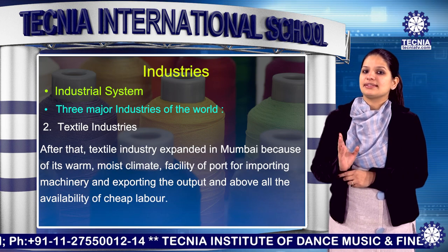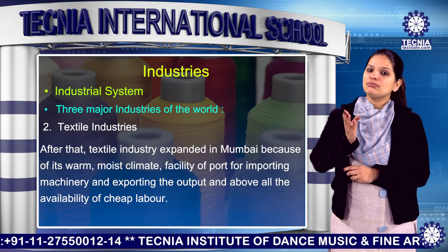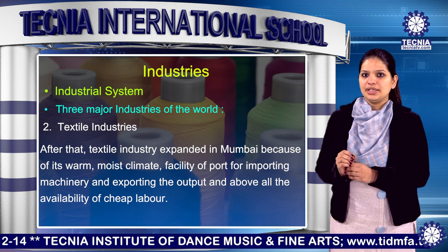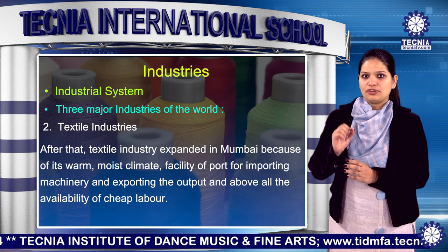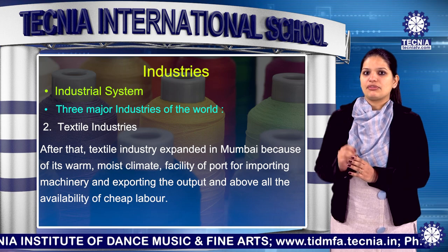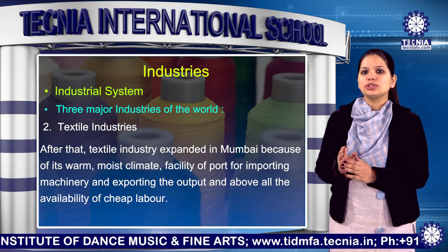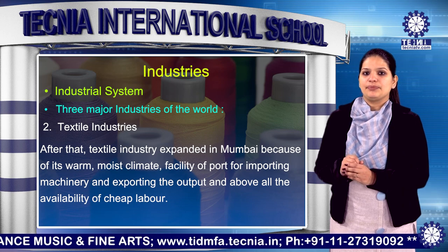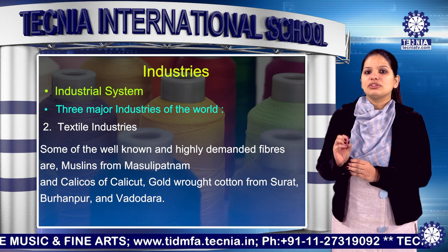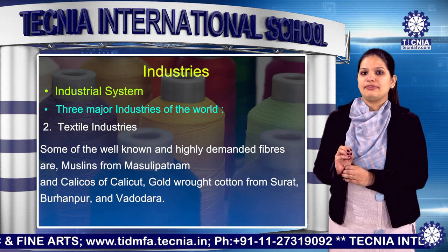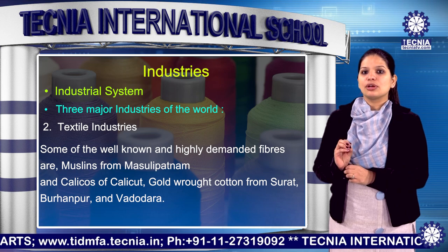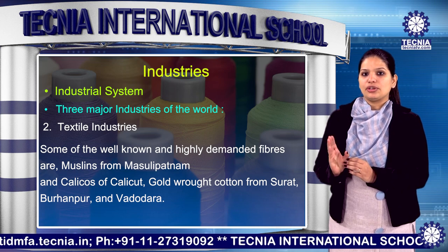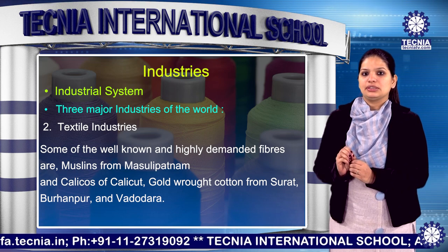After that, textile industries expanded in Mumbai because of its moist climate, facility of port for importing machinery and exporting the output, and above all the availability of cheap labour. Some of the well-known and highly demanded fabrics are muslin from Machilipatnam and block-printed cotton from Surat.